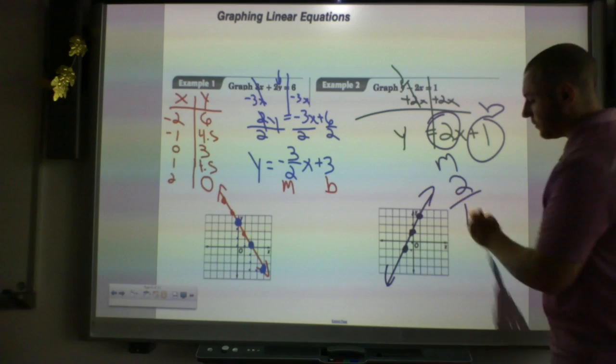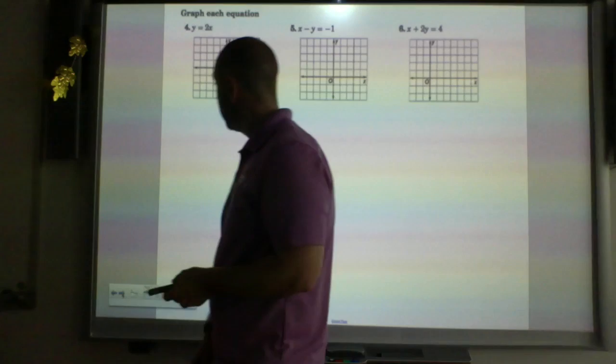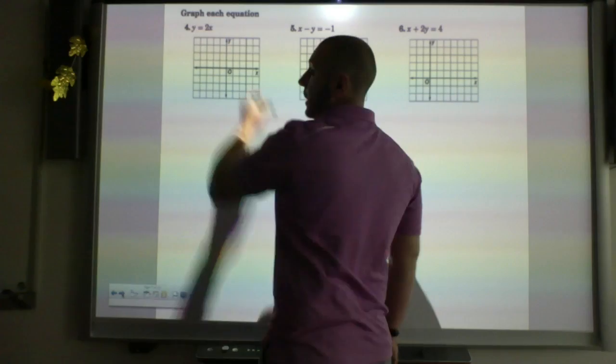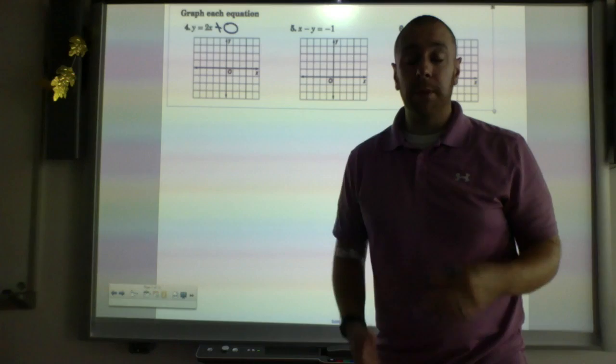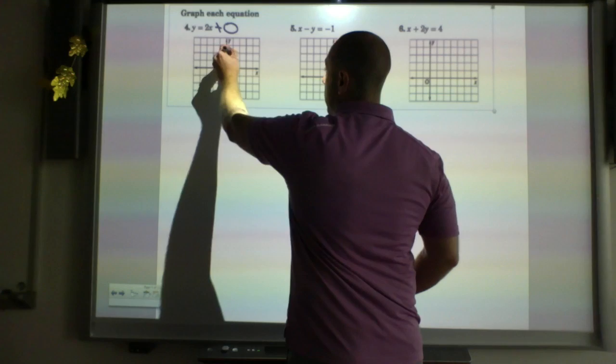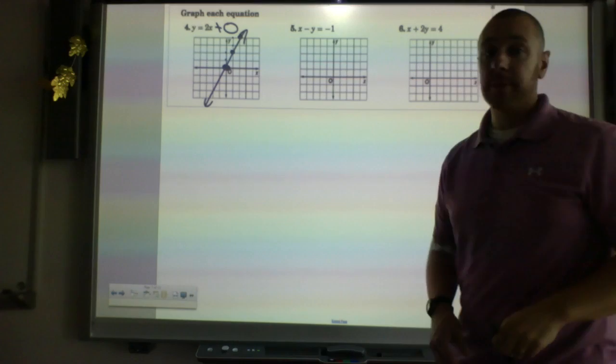Now there is a special case to this. We want to make sure that everyone is clear. For number 4, it's already in y equals mx plus b form, but what you don't see is the b. That means that the b is at 0, plus 0 we don't write a 0. So that y-intercept is right at the origin with a slope of 2 over 1: up 2 over 1, up 2 over 1. And I graph that.